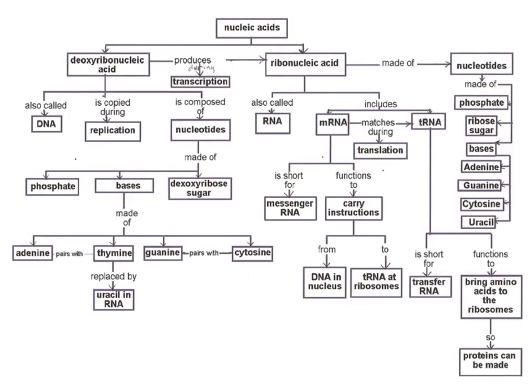The concept map doesn't have to look like that last example. Here's another one that starts with nucleic acids as its main idea and branches out from there. Again, it's not just the term — it's how ideas are connected and how they work together to form the larger concept of DNA. For this lesson they'll focus specifically on DNA structure, and as they learn about the rest of the topics they'll continue to add to their concept map until they have all major concepts mapped out.